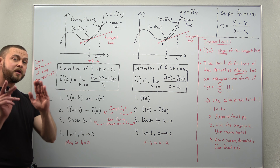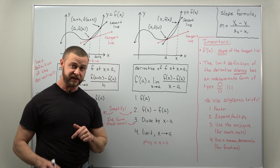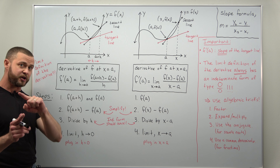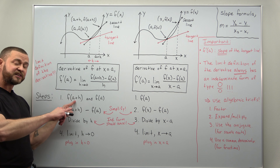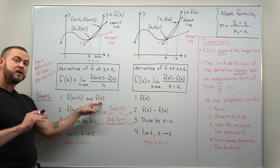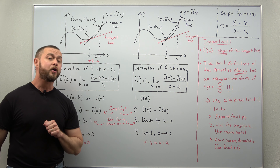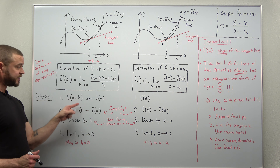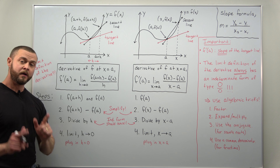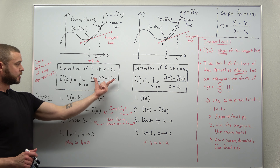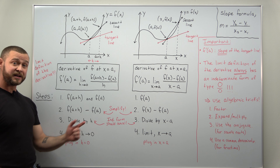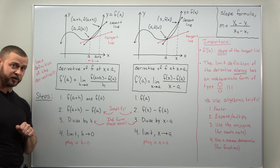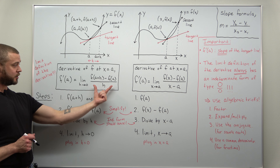Now let's get to the standard steps. Using the first limit definition, step one is to take your function — which will always be given — and plug in all x's with a plus h, and also plug in just a, which is always a number representing the coordinate at which you're calculating the slope of the tangent line. Step two is to calculate the numerator, which is the difference f of a plus h minus f of a. At this step there's typically a lot of cancellation and it should simplify considerably.